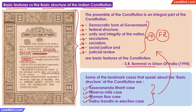As per the basic structure doctrine, any amendment that tries to change the basic structure of the constitution is invalid. So any attempt to reduce the scope of the preamble or change whatever is listed in the preamble will be invalid. For example, the government cannot pass an amendment that India will be a communist republic instead of a democratic republic.